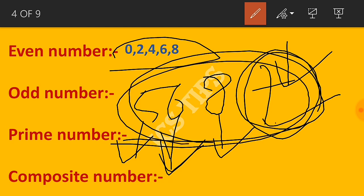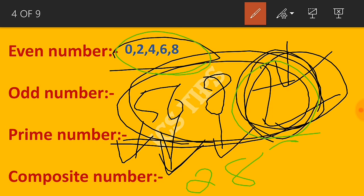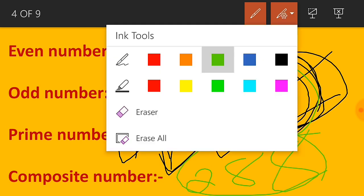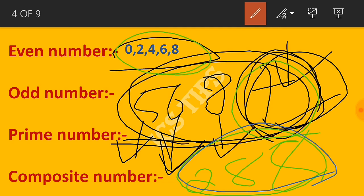For example, 288 has 8 in the unit place, so it's an even number.